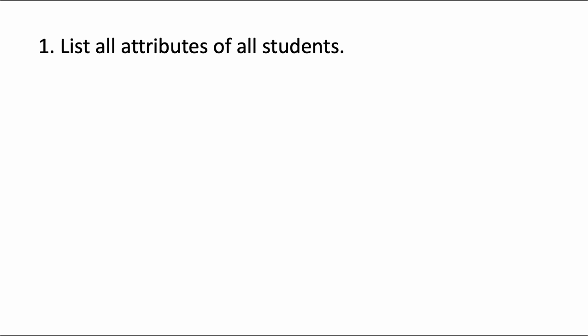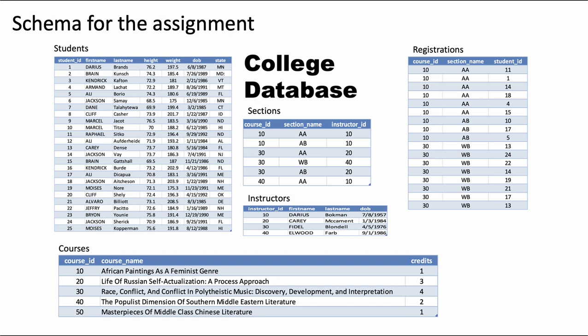The first thing we need to think about whenever you're trying to answer a question is: I've got my schema, and they're telling me to list all the attributes of all students. The very first thing I need to think about is which is the table that contains the information that I want. It could be one table, it could be multiple tables. Given that this is early stages in SQL, we are working with a single table.